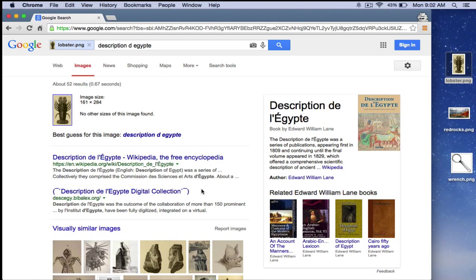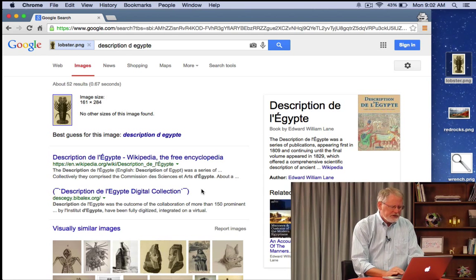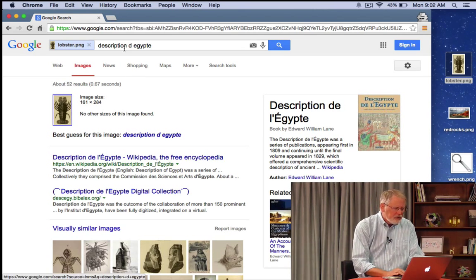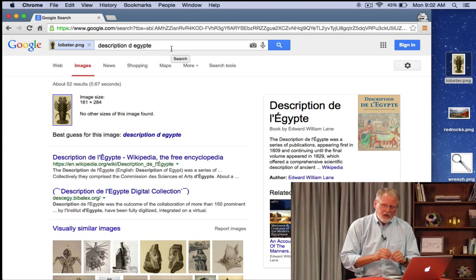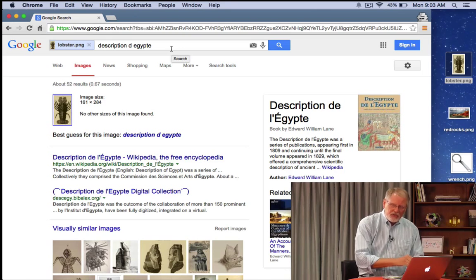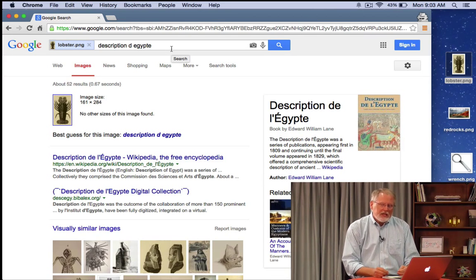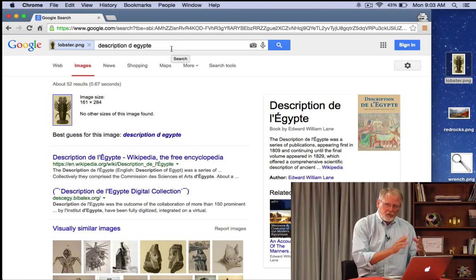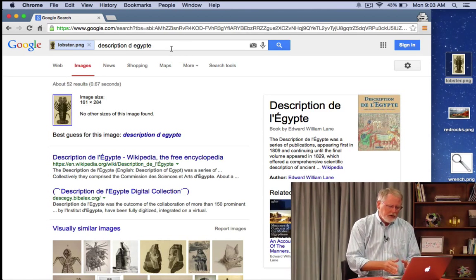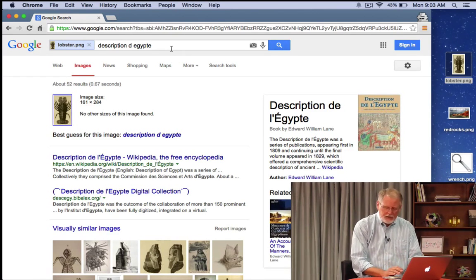And what it does is it uploads the file to Google. Google then looks at it and says, are there any other images on the internet kind of like this? Lo and behold, there are. A couple of things to notice here. First, in the search box at the top is the best description of that image that Google could come up with. In this case, we know that this image of the lobster is derived from, or part of this book, description de l'Egypte.